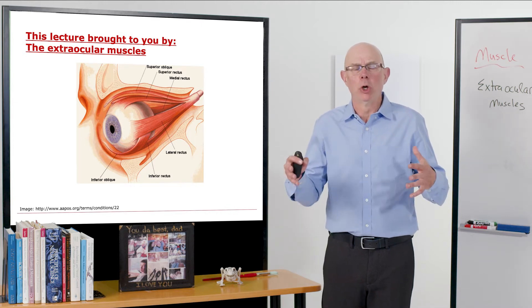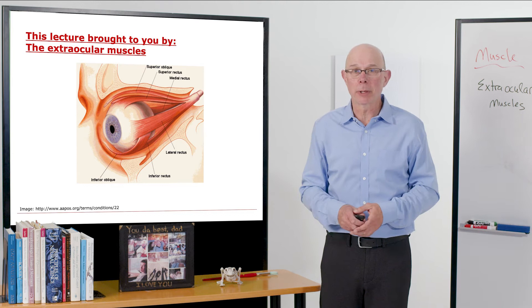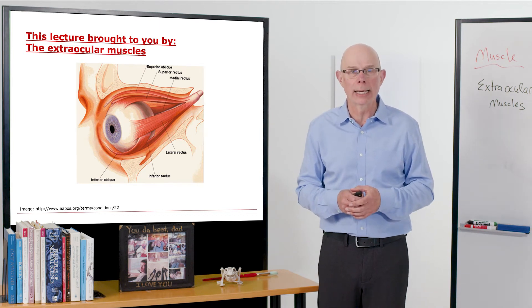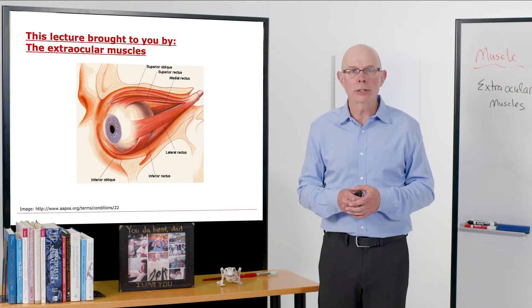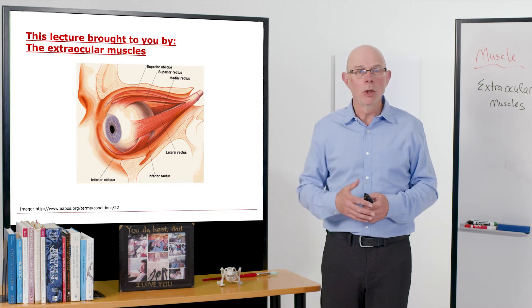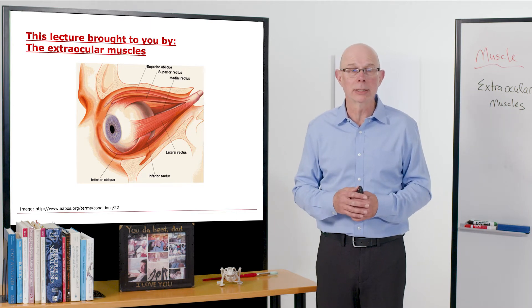I'm not going to have you learn all the names of these muscles, but I want you to figure out how they integrate with the nervous system because it's quite fascinating how we can control our eyes. We need to do that so well for reading, for example, or in primitive times to hunt and avoid being hunted.